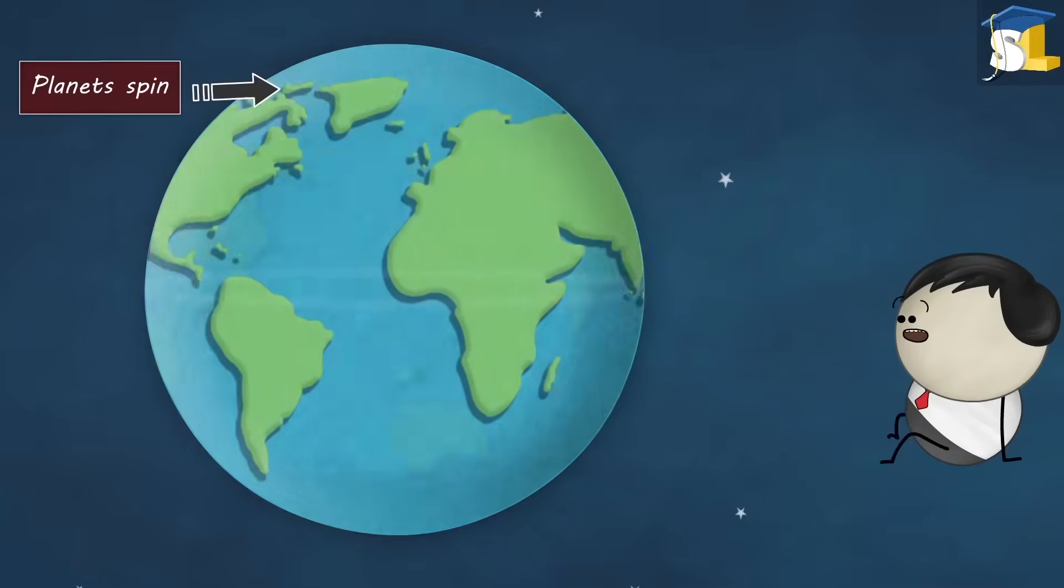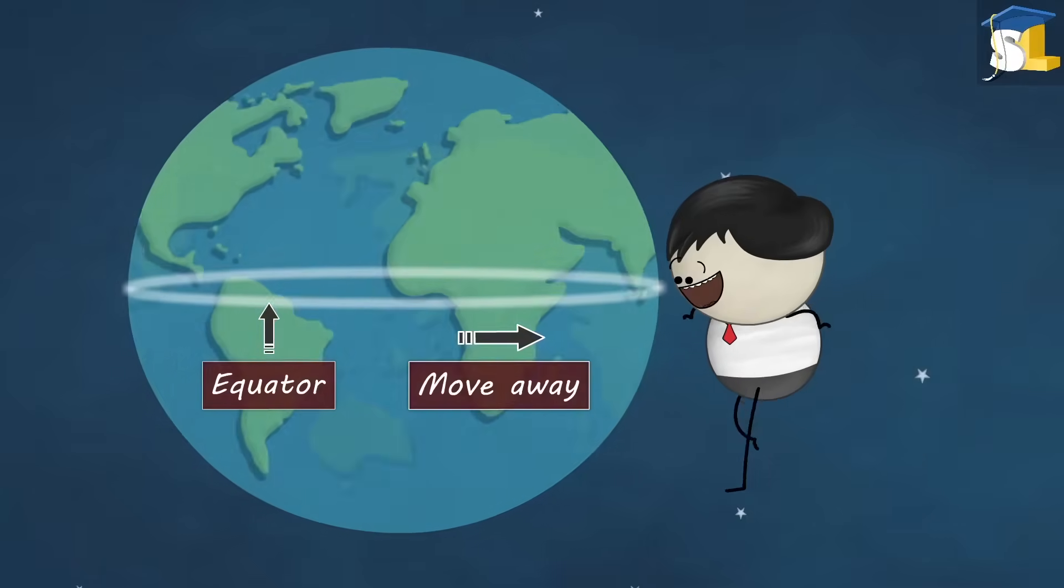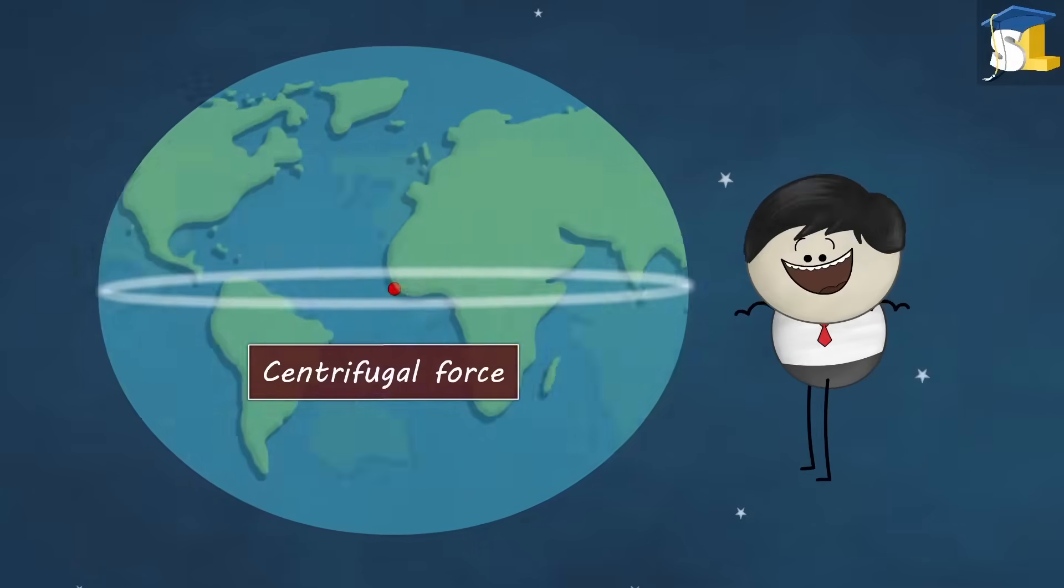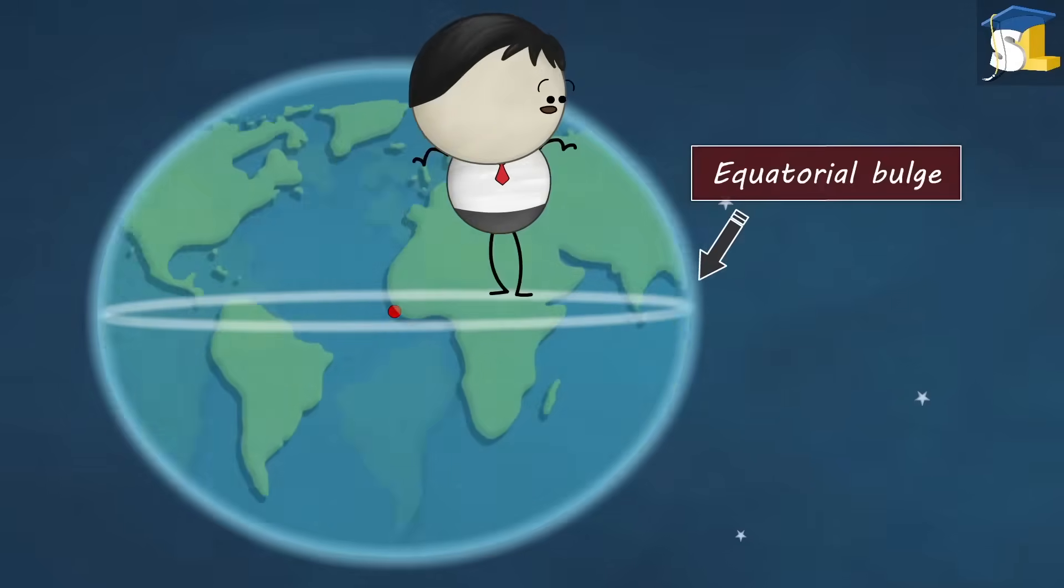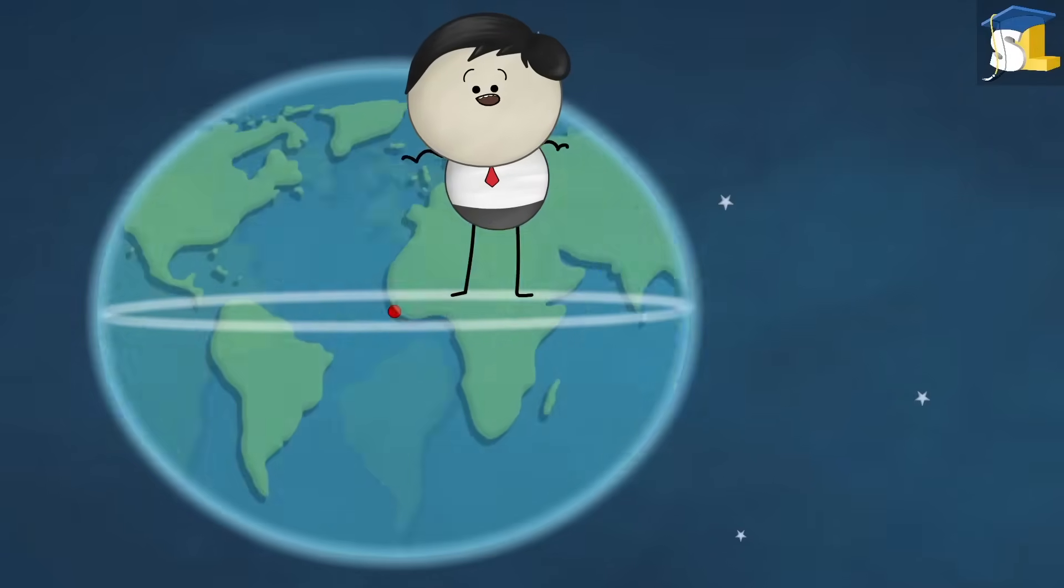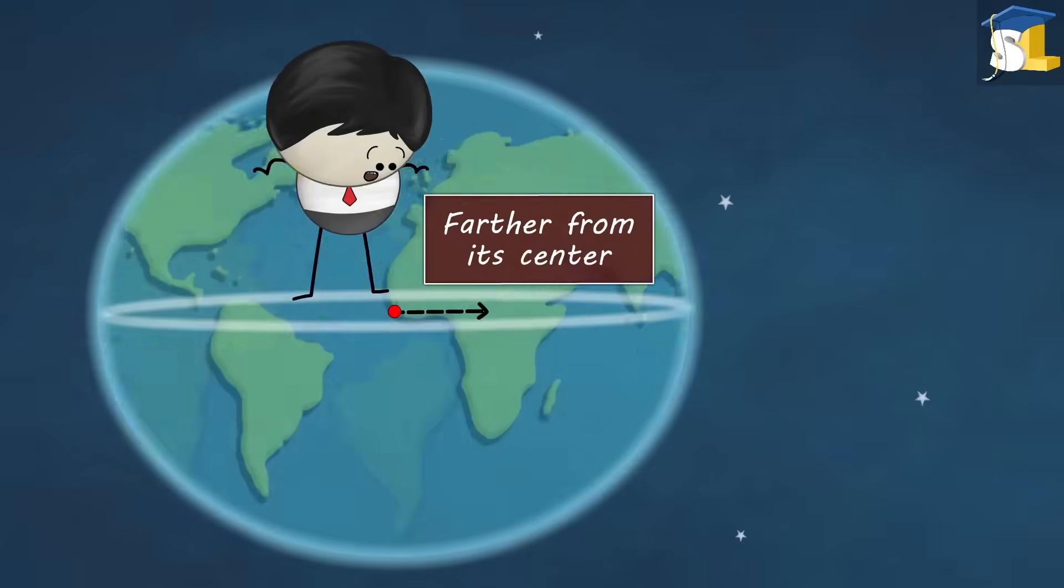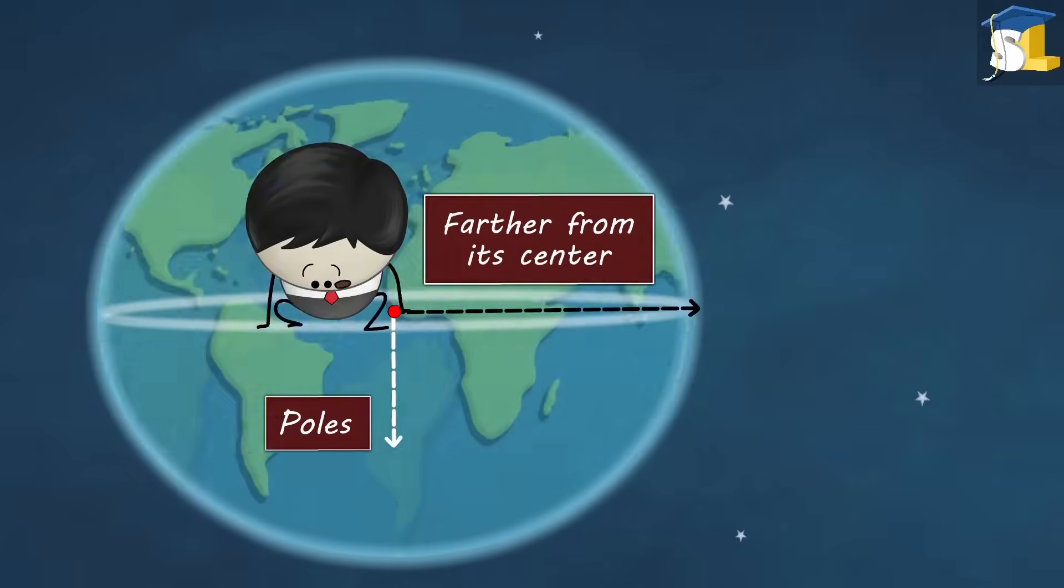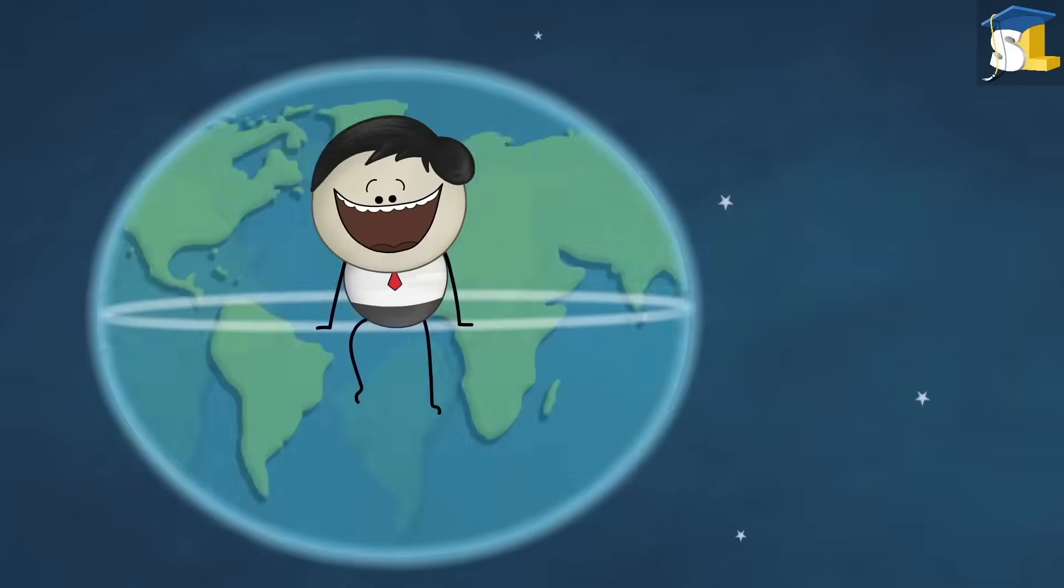When planets spin, things near the equator tend to move away from the center due to centrifugal force. Resulting in formation of an equatorial bulge. Because of this bulge, the equator of a planet becomes farther from its center than its poles, creating a roughly spherical planet.